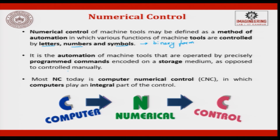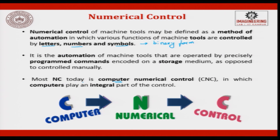It is the automation of machine tools that are operated by precisely programmed commands encoded on a storage media, as opposed to being controlled manually. If you want to repeat a part many times, a program is written and stored. This program has letters, numbers, and symbols which can be retrieved whenever you want to rerun it. Most NC today is computer numerical control — CNC.